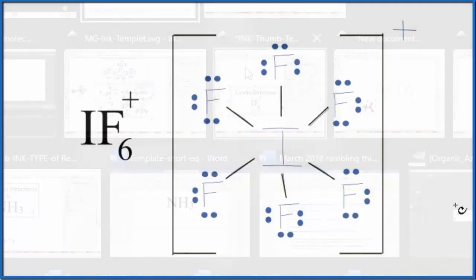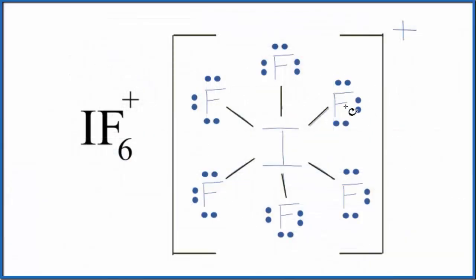Back to our Lewis structure, we can see that those six fluorine atoms, when they spread out, that gives us the octahedral molecular geometry for IF6 plus. This is Dr. B, and thanks for watching.